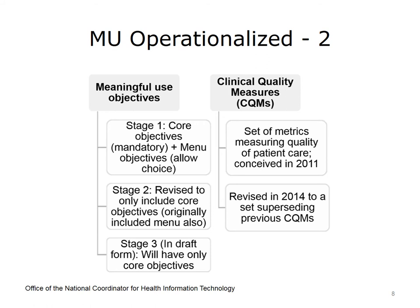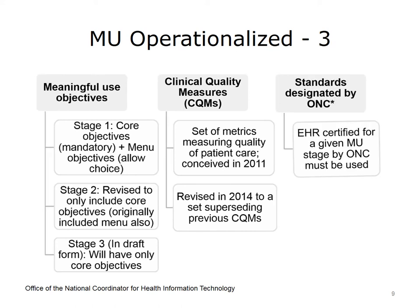In addition to meeting the Meaningful Use objectives, there are Clinical Quality Measures, or CQMs, that must be met as part of the three requirements. In the 2011 release, there was one set of CQMs for eligible hospitals and another for eligible providers. These were superseded in 2014 by expanded sets of Clinical Quality Measures. Starting in 2014, all those seeking remuneration through the Meaningful Use Program needed to meet the new CQMs. The third requirement was meeting standards designated by the Office of the National Coordinator for Health Information Technology, or ONC, via certified electronic health records.